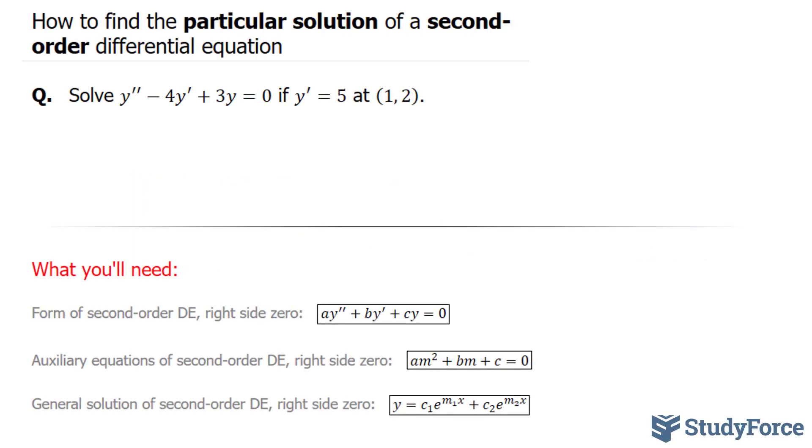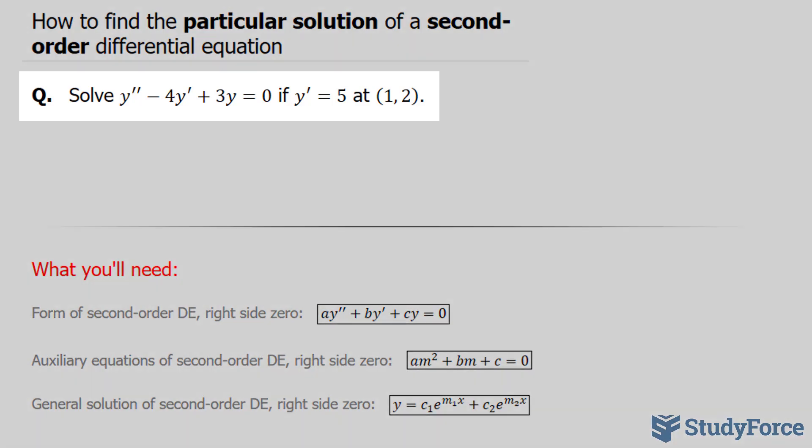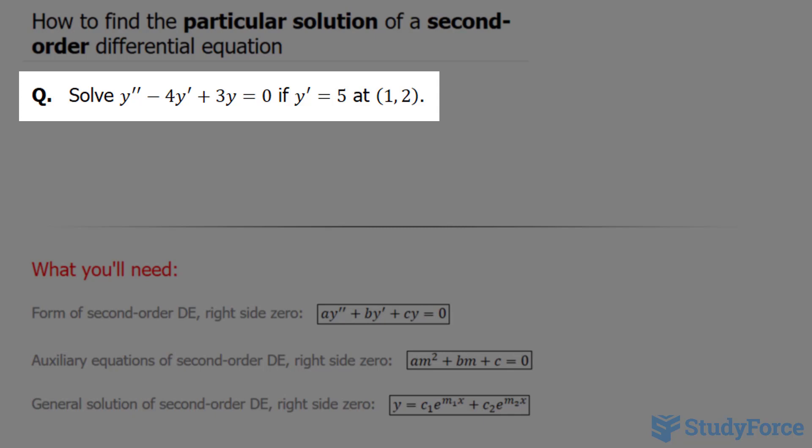In this lesson, I'll show you how to find the particular solution of a second order differential equation. The question reads: solve y double prime minus 4y prime plus 3y is equal to 0 if y prime is equal to 5 at (1, 2).